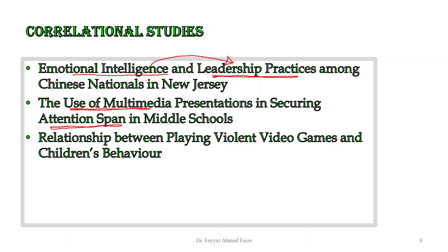Another example that reflects correlational design is the relationship between playing violent video games and children's behavior. This topic is trying to establish some kind of relationship between its two variables. One variable is playing violent video games, and the researcher will find out how much violent video games are being played and what effect it has on children's behavior.